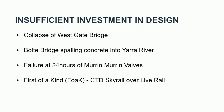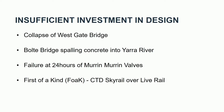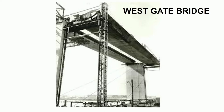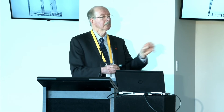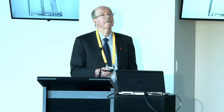Some examples: the collapse of the Westgate Bridge, the Balti Bridge spalling concrete into the Yarra River, Murren Murren valves, and the first-of-kind Sky Railer. For the Westgate Bridge, between Piers 10 and 11 it was a simply supported D-shape erected in two halves with a longitudinal stitch. The late Paul Grundy from Monash University found that a D-shape deflects uniformly under its own weight, but half a D is an H-shape and the H rotates outwards. They could connect the bottom stitch of the steel box girder but couldn't pull the top across — it buckled. The bridge was also under-designed.